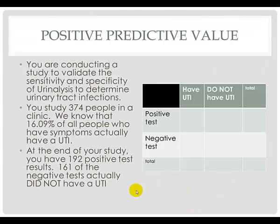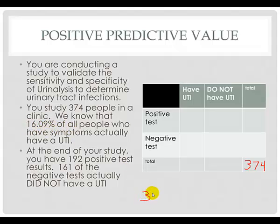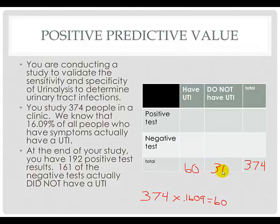In this example, we're using urinalysis to identify urinary tract infections. If you've watched the other video on sensitivity and specificity, you'll recognize how we input this information into a 2x2 table. There were 374 people in our study, and 16.09% of them have a urinary tract infection. So 374 multiplied by 0.1609 gives us 60 — meaning 60 people, regardless of their test result, have a urinary tract infection, and that leaves 314 that don't.